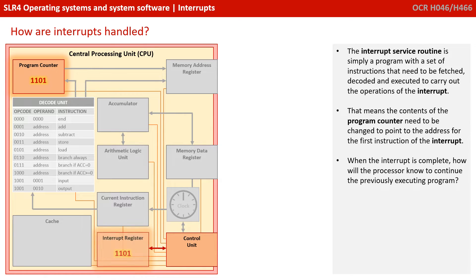The interrupt service routine is simply a program with its own set of instructions that need to be fetched, decoded, and executed to carry out the operations of the interrupt. That means the contents of the program counter need to be changed to point to the address for the first instruction of the interrupt.